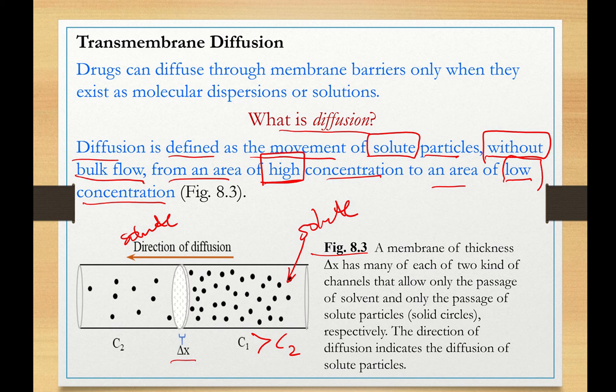The diffusion of water molecules would be from left to right as the water concentration. C2 water is higher than C1 water because there is less solutes in C2, on the left. Therefore, the direction of diffusion of water molecules would proceed from left to right. Very important here.